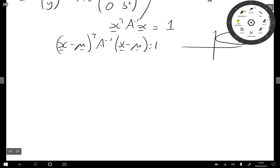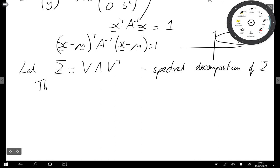So to see this, let's suppose let Σ be V Λ V transpose. So this is the spectral decomposition of Σ. Okay, then if we let y be V transpose (x - μ), then our equation here becomes y transpose Λ inverse y equals 1.